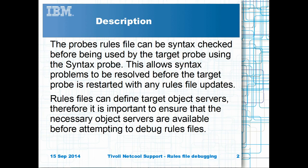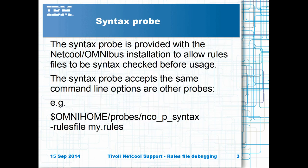In order to run rules files, the target object server must be available. You can use the syntax probe from the command line using $omnihome/probes/nco_p_syntax -rules_file my.rules. If there are any issues, the probe will log out the first error it encounters and its line number.